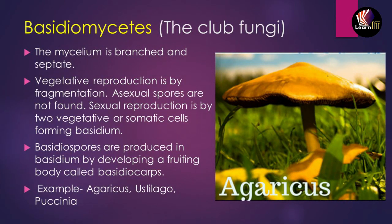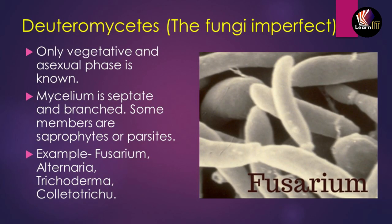Basidiomycetes, also known as club fungi, are branched and have a septate structure. They only do vegetative reproduction through fragmentation; asexual spores are not found. Sexual reproduction occurs by two vegetative or somatic cells forming basidium, and basidiospores are produced in a fruiting body called basidiocarp. Examples include Agaricus, Ustilago, and Puccinia.